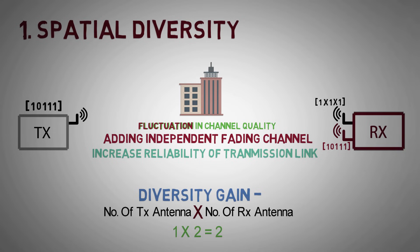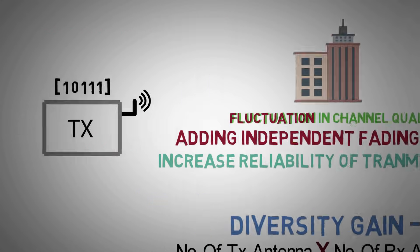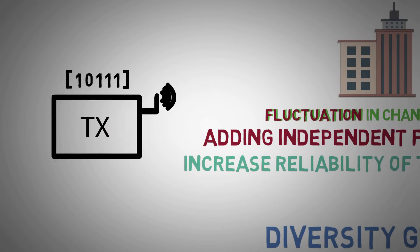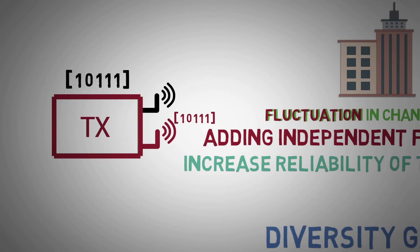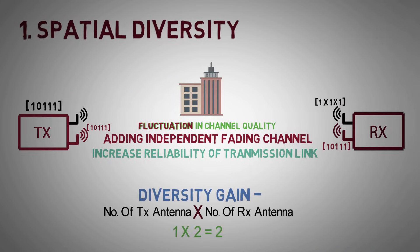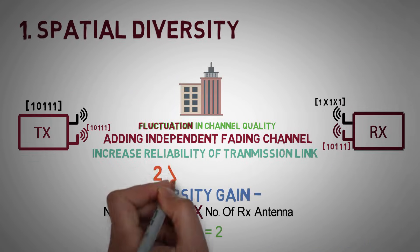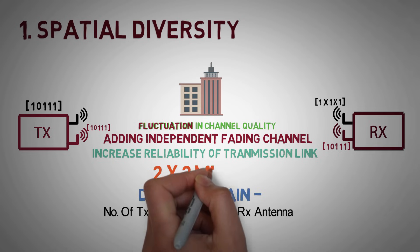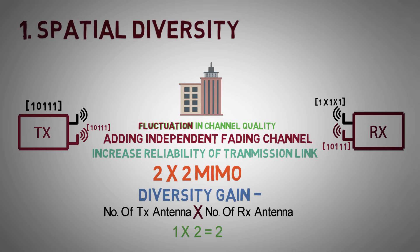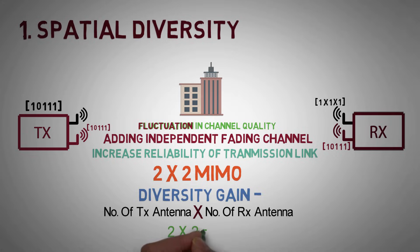In this way, more diverse paths can be created by adding multiple antennas at the transmitter side as well. The following figure shows a 2x2 MIMO system with the number of diversity paths equal to 2 x 2, which equals 4.